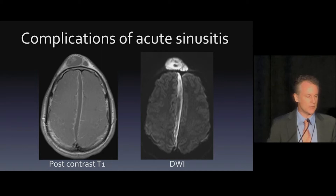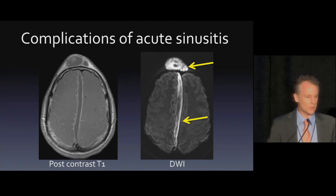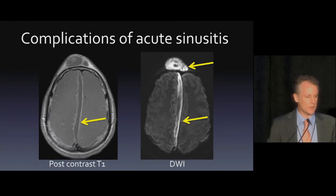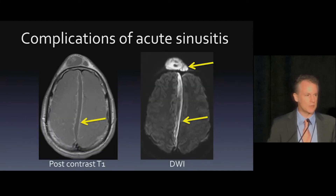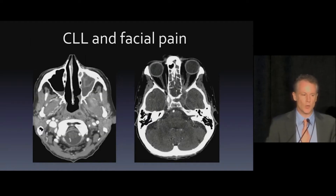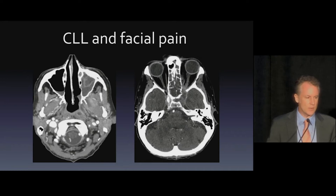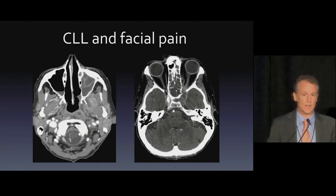These are complications of acute sinusitis. You'll see there's a diffusion-restricting collection in the anterior soft tissues and posteriorly as well with surrounding contrast enhancement. So this is a subdural empyema, and then what we used to call Pott's puffy tumor before we had imaging — now it's a soft tissue abscess. This is an immunocompromised patient with CLL and facial pain. You'll see that inspissated stuff in the left maxillary sinus, but also look at the fat behind the maxillary sinus — it doesn't look the same as the opposite side, it looks more fuzzy. That's periantral fat stranding, an indication that something is moving out of the sinus, and that's very dangerous.